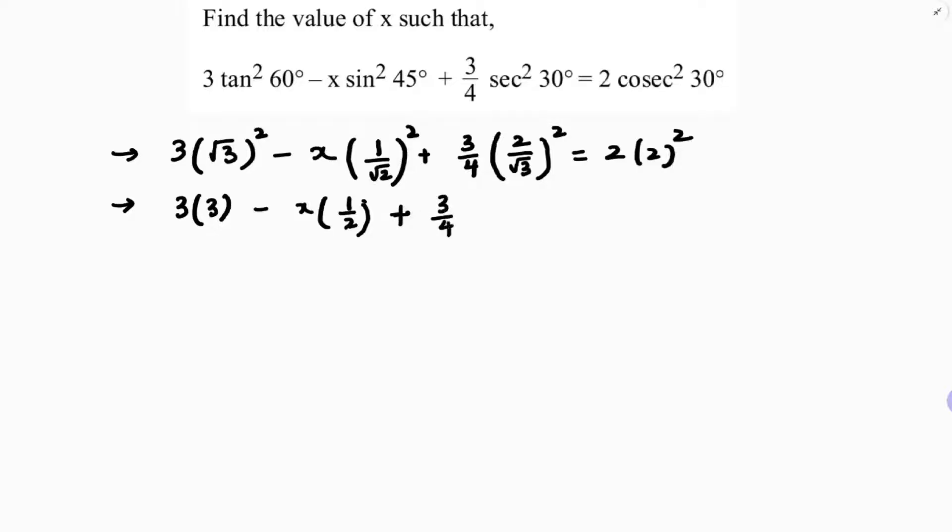3/4 into 4/3 equals 2 into 4. You see 4 and 4 cancel, 3 and 3 cancel, so 1.